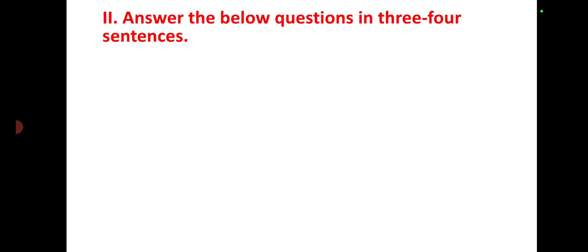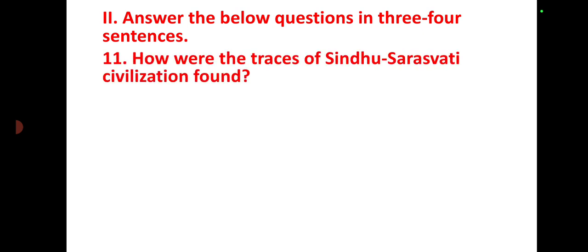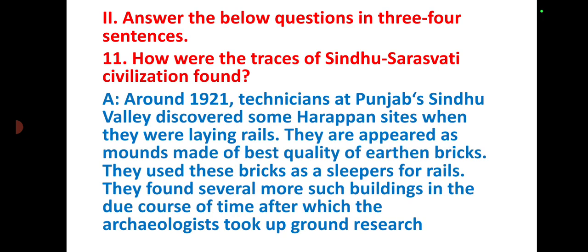The first question is: how were the traces of Sindhu-Saraswati civilization found? Around 1921, technicians at Punjab's Sindhu valley discovered some Harappan sites while laying railway tracks. These sites appeared as mounds made of best-quality earthen bricks, which were then used as sleepers for the rails.